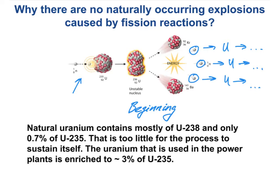But natural uranium deposits contain mostly uranium-238, and only 0.7% of it is made up of fissionable uranium-235. That is too little for the process to sustain itself. Neutrons produced in the first fission just don't find enough uranium-235 atoms to hit, and the process dies down. The uranium used in power plants and nuclear bombs is enriched — intentionally processed to increase the concentration of uranium-235 to ensure a cascade of fission reactions that will produce a lot of energy.